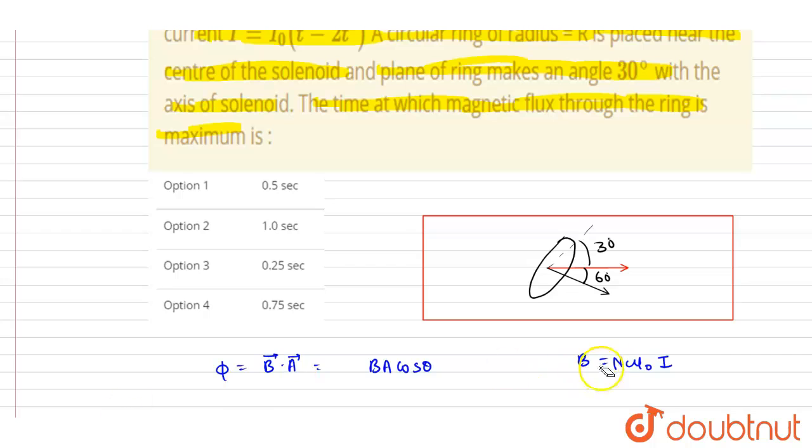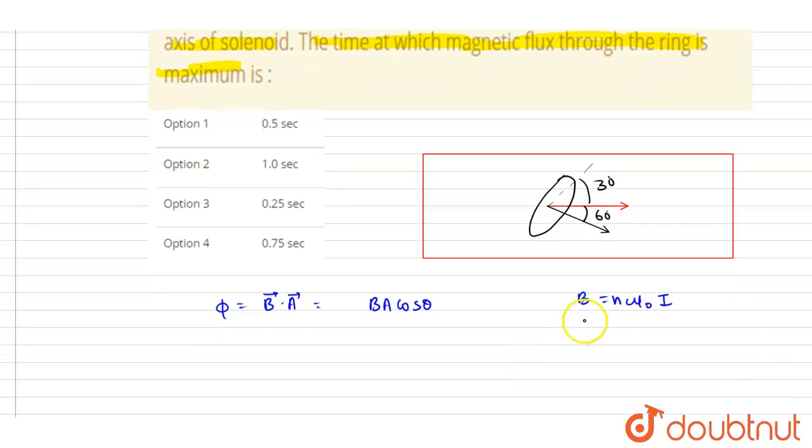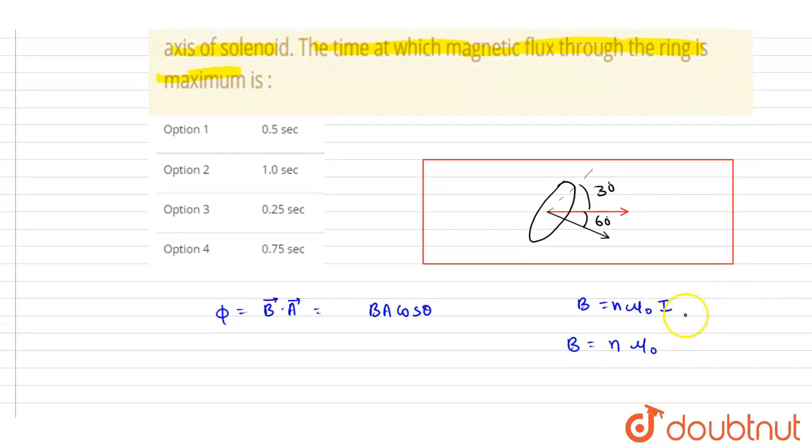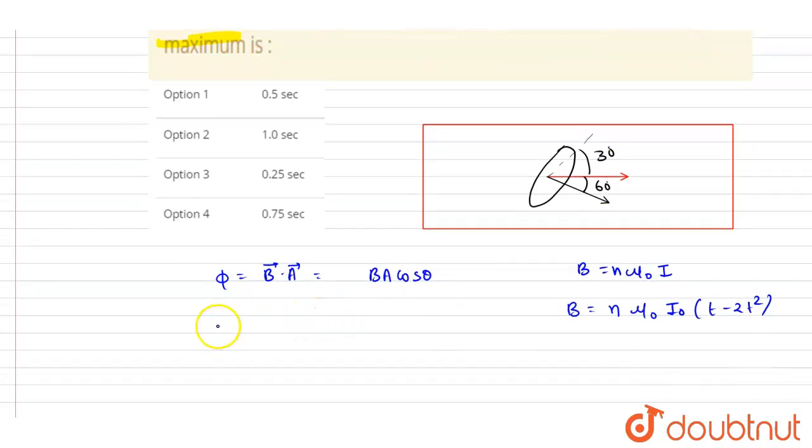If you see the magnetic field inside a solenoid, we know that it is μ₀ I times the number of turns per unit length n. So if you see here, the I is varying with time, so I will write it as number of turns per unit length times I₀(t - 2t²).